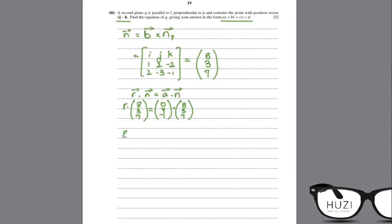So this would finally be minus 8x minus 3y minus 7z equals to 3 into 4, which is 12, minus 7 is 5. So this is the Cartesian equation of the plane Q.